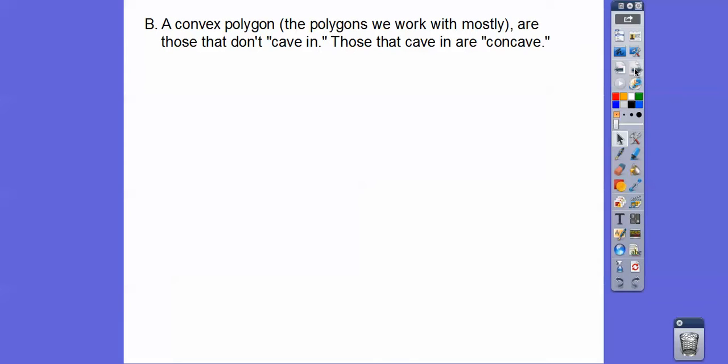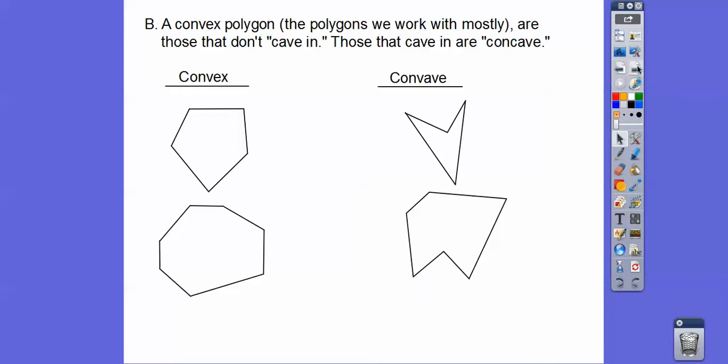So it's mostly the polygons that we work with, and the convex are the ones that don't cave in. The ones that cave in are called concave polygons. So here's these are two convex polygons right here, and these are two concave polygons. You see how they cave in sort of to the interior of the polygon?